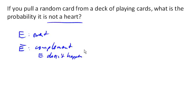Now, because the probability of something happening is 100%, or 1, then the probability of an event happening and the probability of the event not happening need to add up to 1, need to add up to 100%. And so the probability of an event not happening is 1 minus the probability of the event happening.